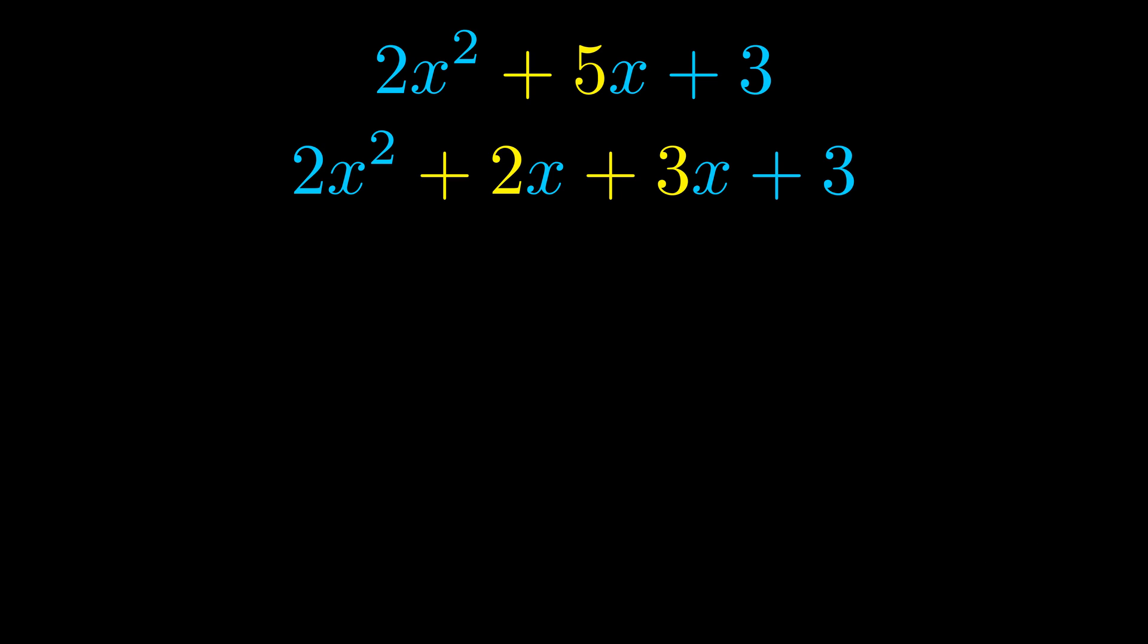Once we've done this, we go ahead and put parentheses around the first term and the last term, and we do that so that we can take the greatest common factor out of both terms.